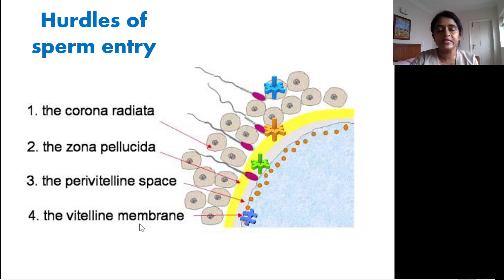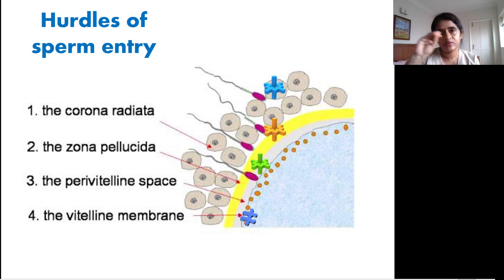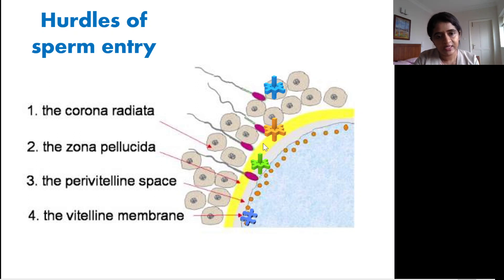The first hurdle is the corona radiata. At the time of ovulation the oocyte gets released from the Graafian follicle along with some of the granulosa cells surrounding it, arranged in the form of corona radiata. Then beneath it is the zona pellucida. Next is the perivitelline space — the space between the zona pellucida and the vitelline membrane — and finally the vitelline membrane itself. These are the four main hurdles the sperm must cross.